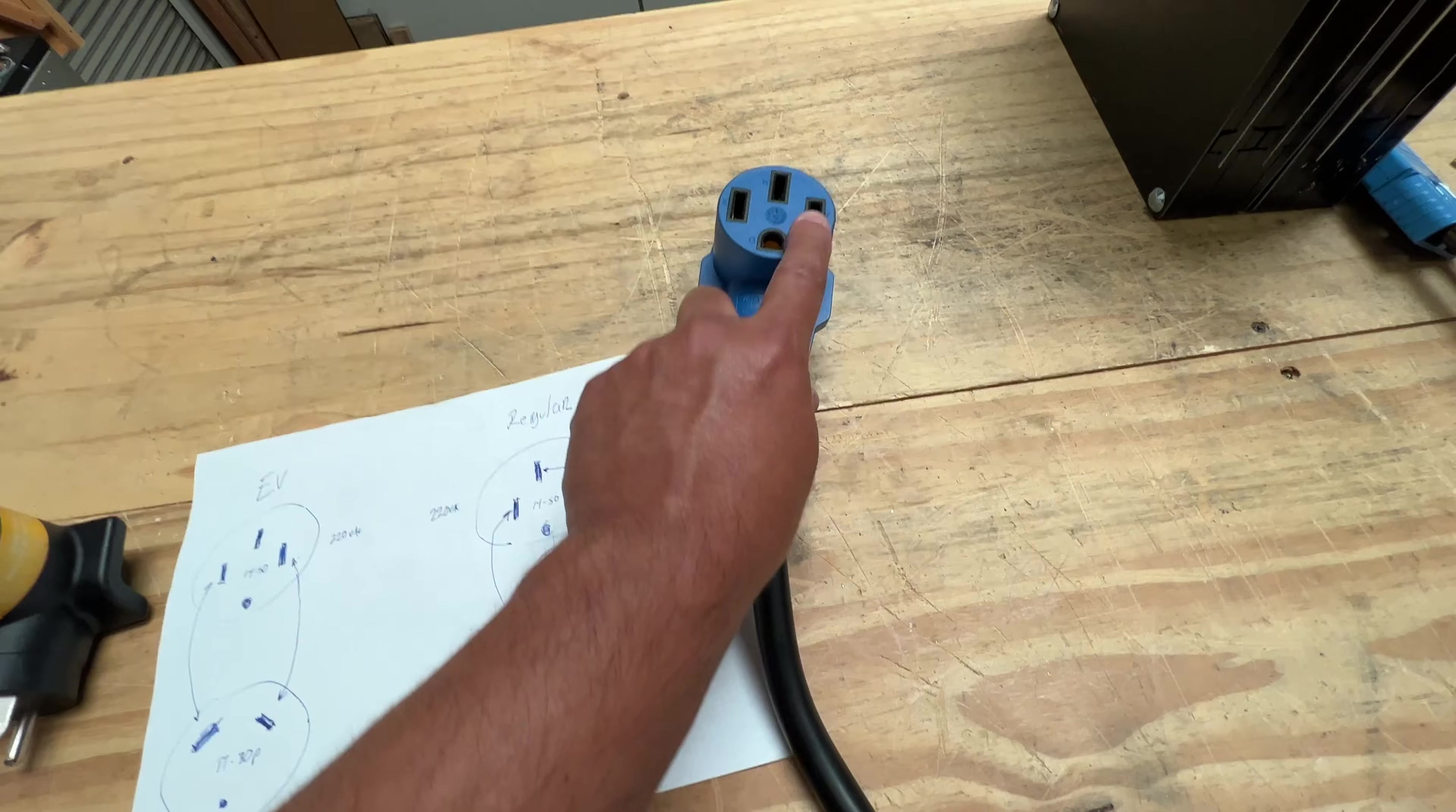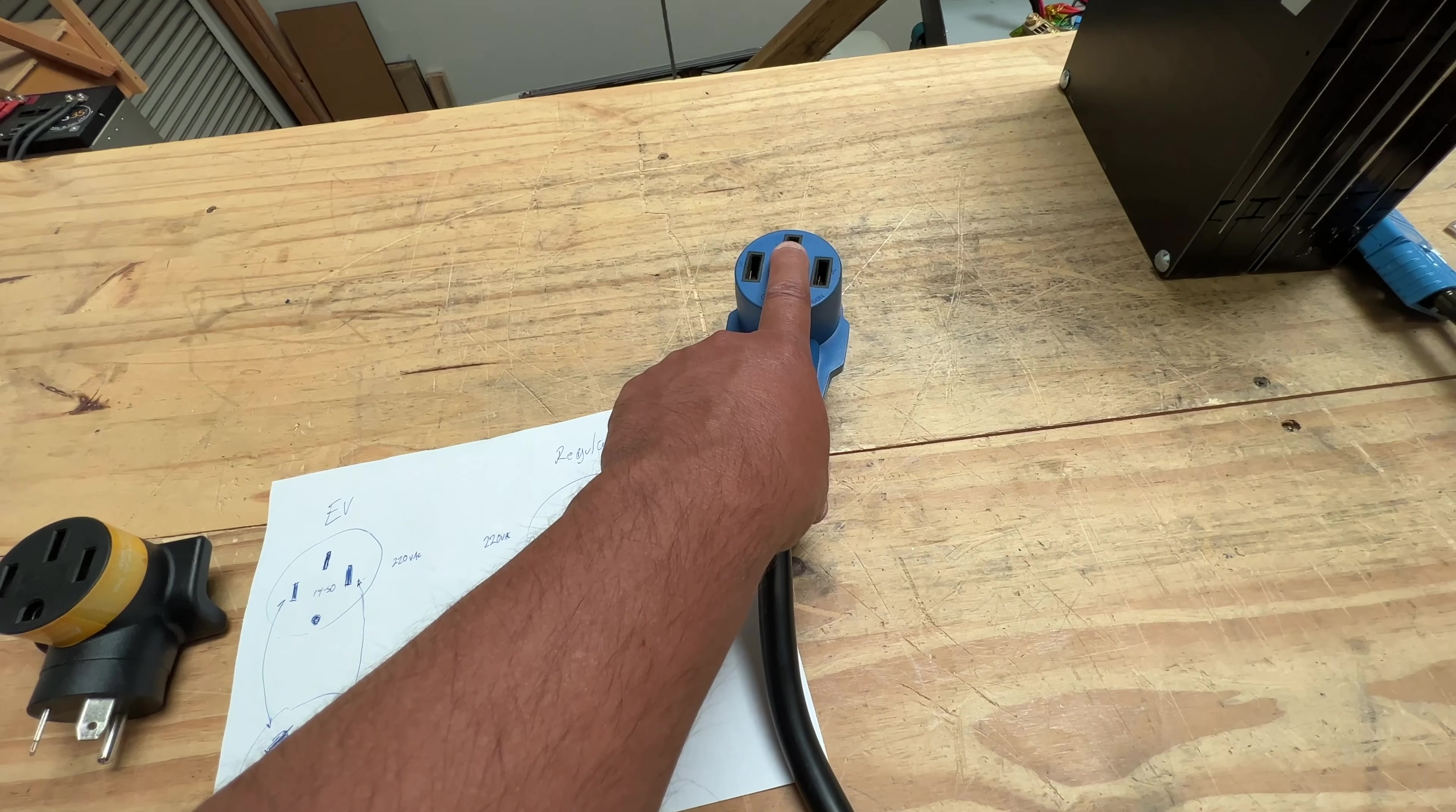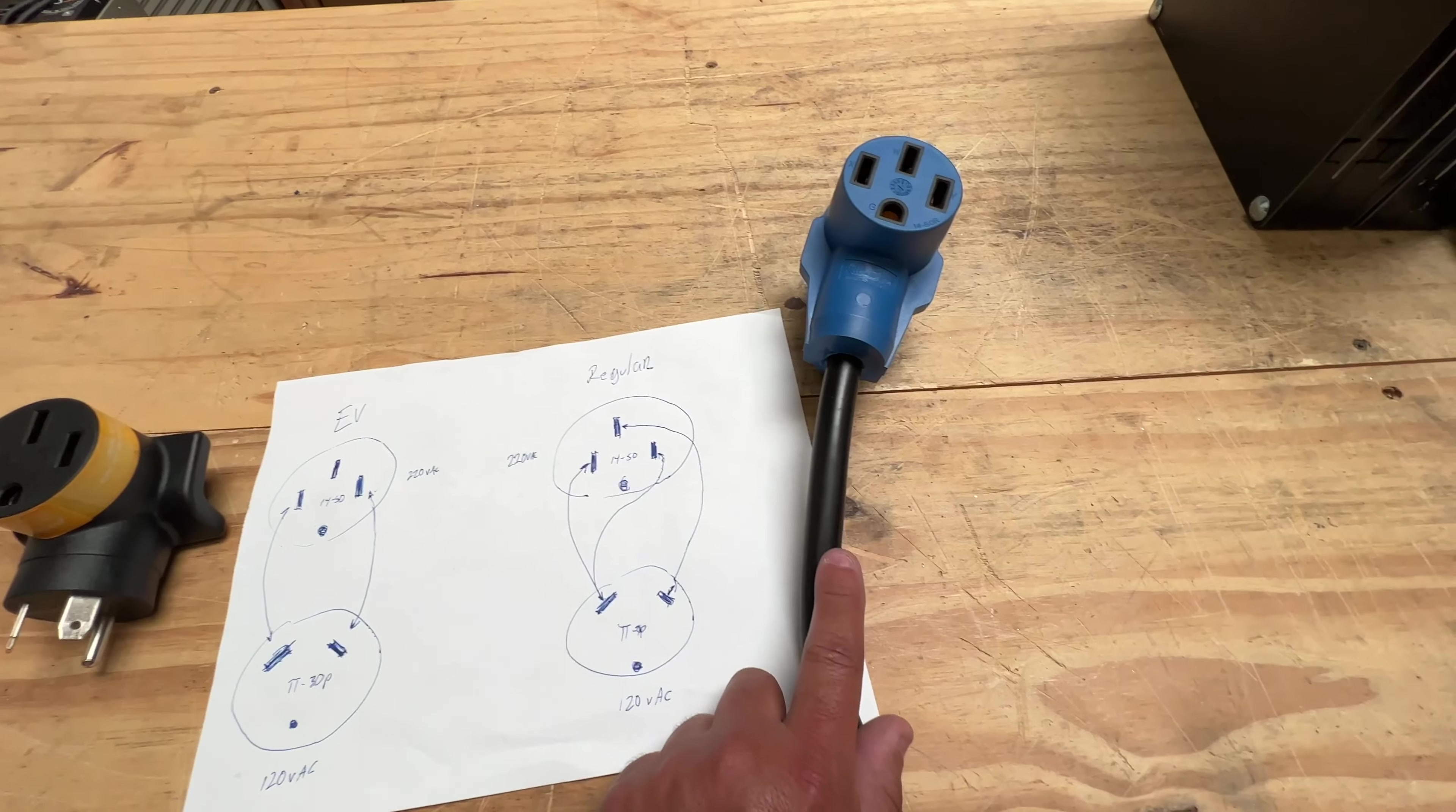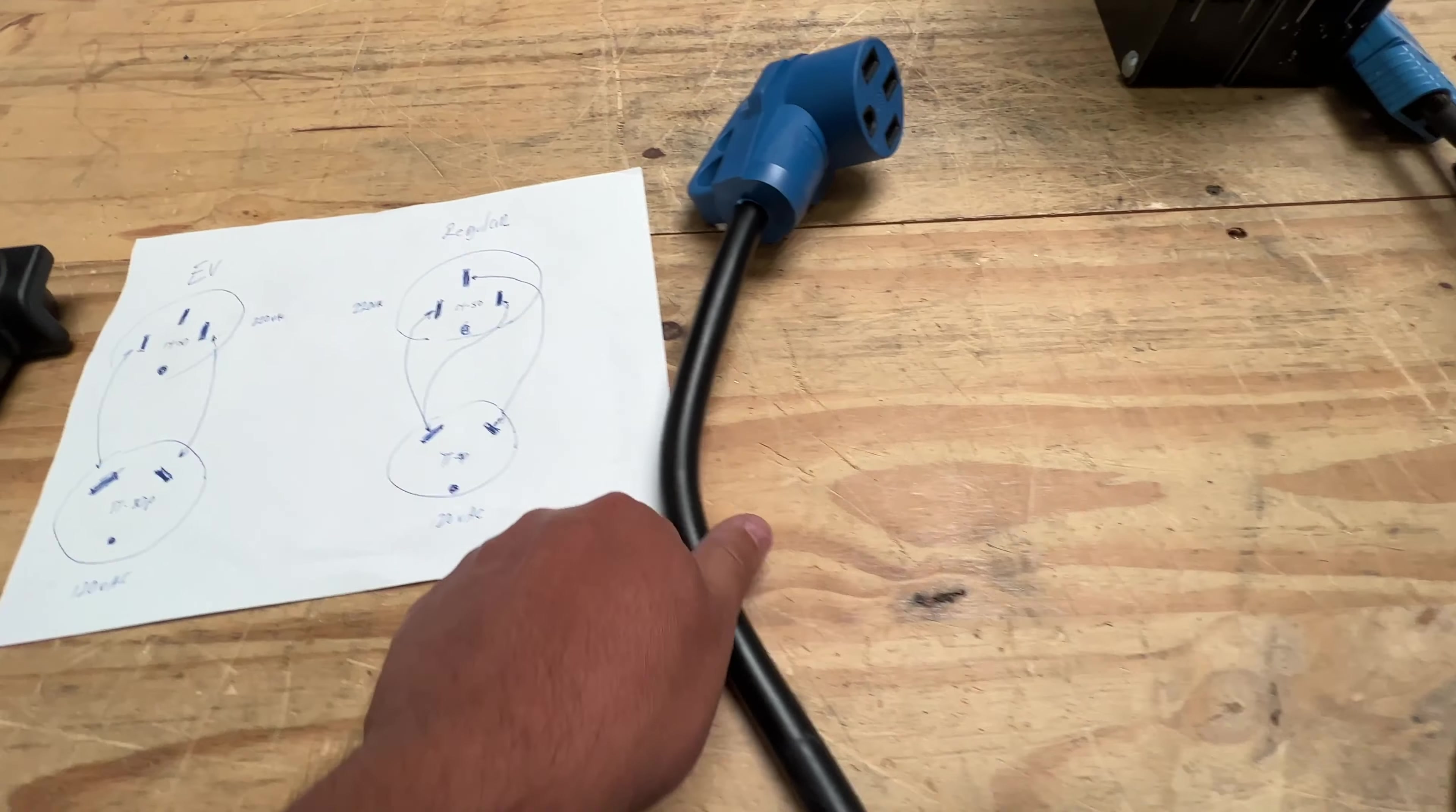If you plug an EV charger here, it will not work because it's going to ignore the neutral. EV chargers don't use the neutral—they just use the two hots because they're trying to look for 220. This one is basically going to short out the two main pins. Nothing bad is going to happen; there's just no power. You're plugging into the wrong pins.